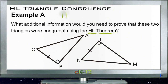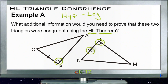Remember that HL is hypotenuse leg, which means we just need to know the hypotenuse of the two triangles are congruent and that one of the legs is. So for the two triangles we have, we know that they are right triangles and we know that one of the legs are congruent with the two triangles.